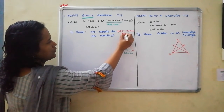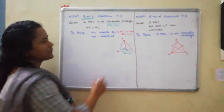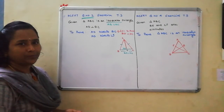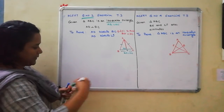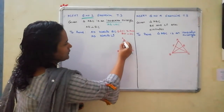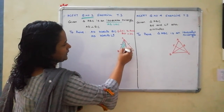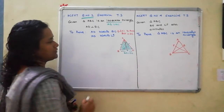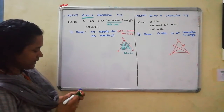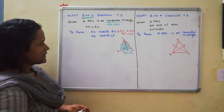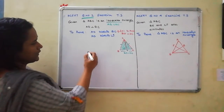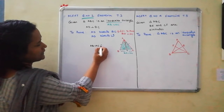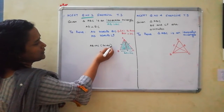So what we need to prove is BD equal to DC. We are using the congruence rule. I am considering these 2 triangles: triangle ABD and triangle ADC. What are the 3 equal points here? First point is already given: AB equal to AC, since it is an isosceles triangle.